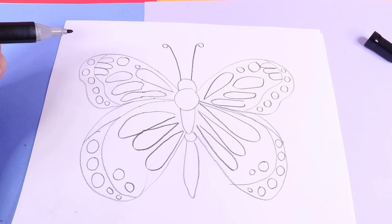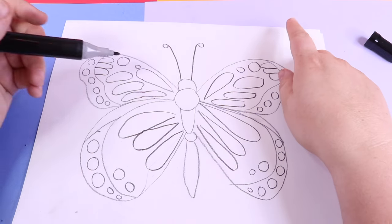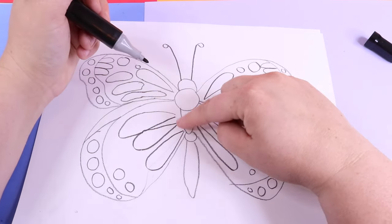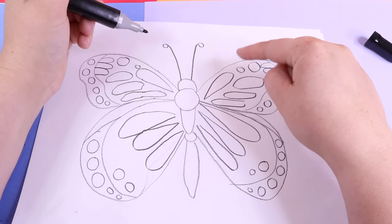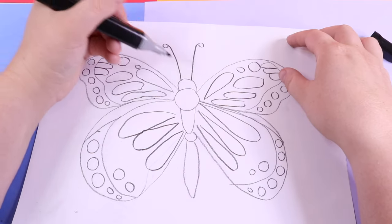We're going to make this butterfly starting with our black marker. Black areas will be painted black first, and then we can add everything else.